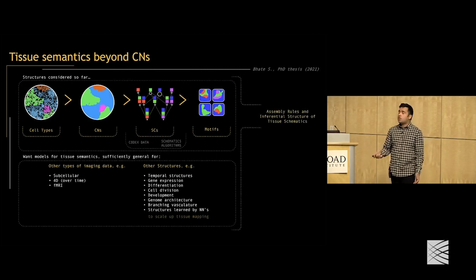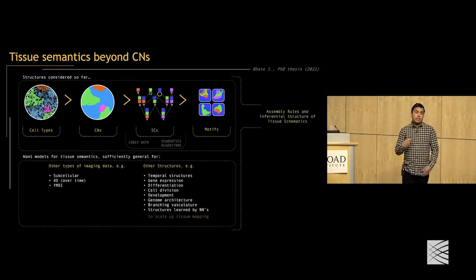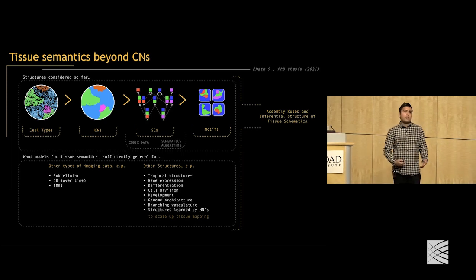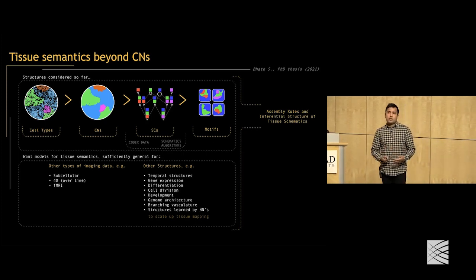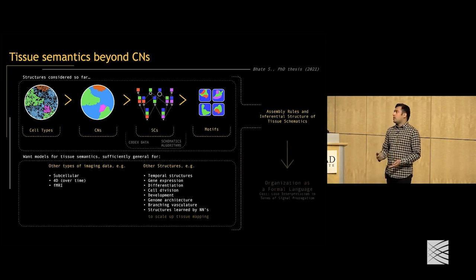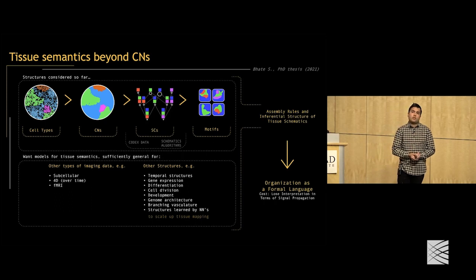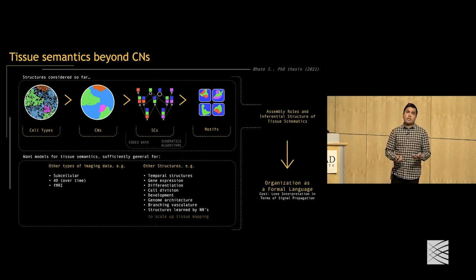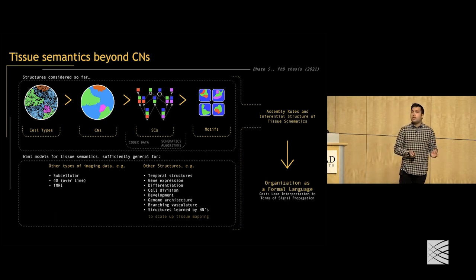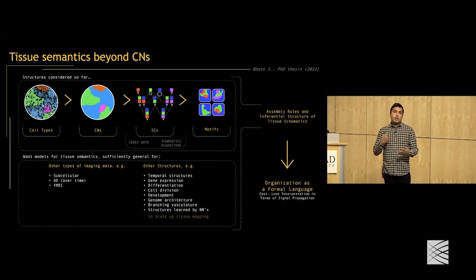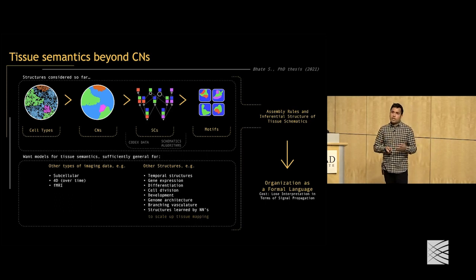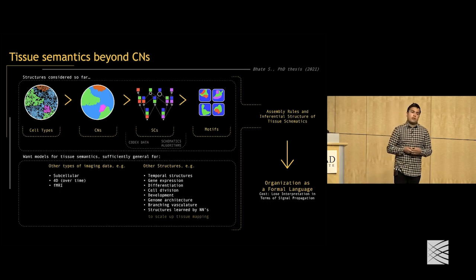I'll briefly talk about how the assembly rules and inferential structure from tissue schematics very naturally generalizes to picturing the organization of a tissue as a formal language. The cost of this generality is that we lose the interpretation we had in terms of signal propagation and what was happening within neighborhoods.